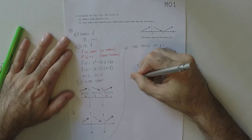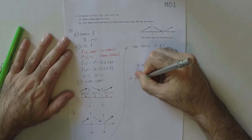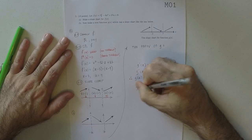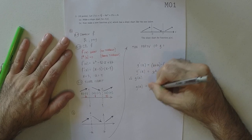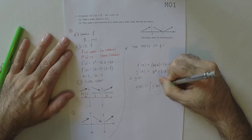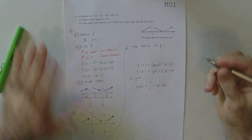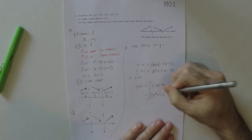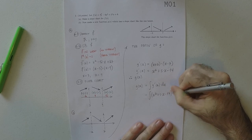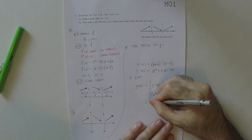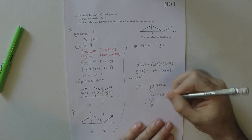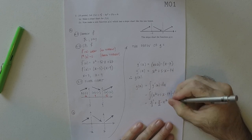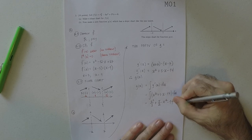And so, now, to find g, to find g of x, we want to anti-differentiate that. So, g of x is the anti-derivative of this. So, this would be the anti-derivative of x squared plus 5x minus 14 dx.